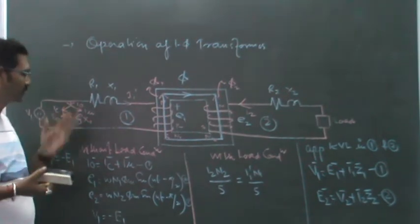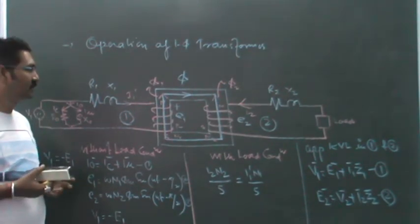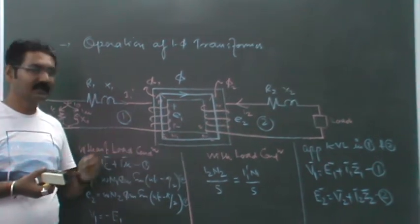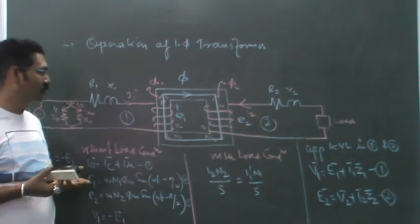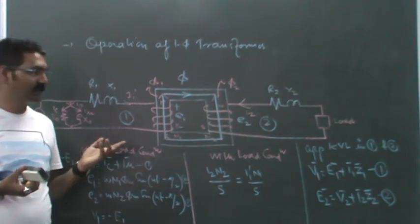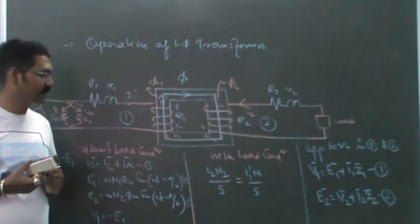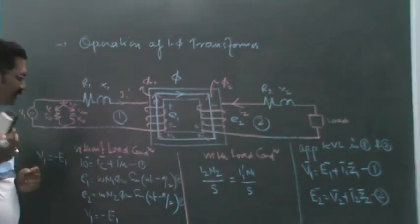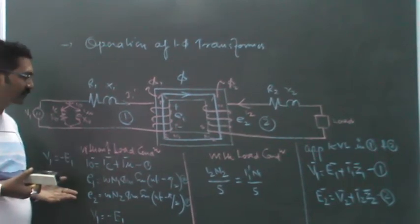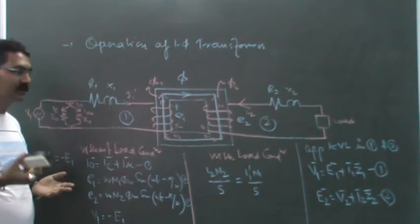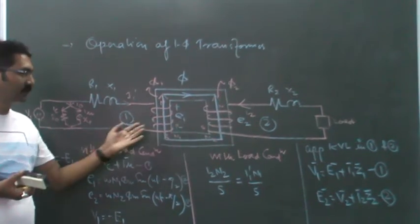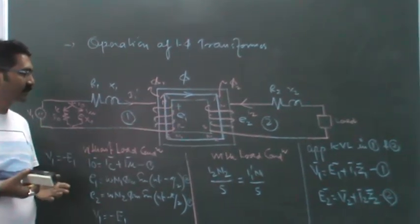This flux is attached to both windings, primary and secondary, so electromagnetic forces E1 and E2 are induced in both. We've seen how these are mathematically expressed. The varying flux induces E1 and E2, which lag from the flux by 90 degrees.